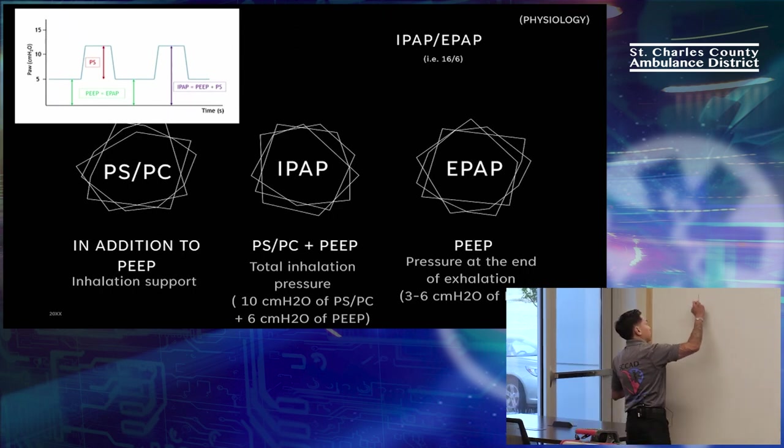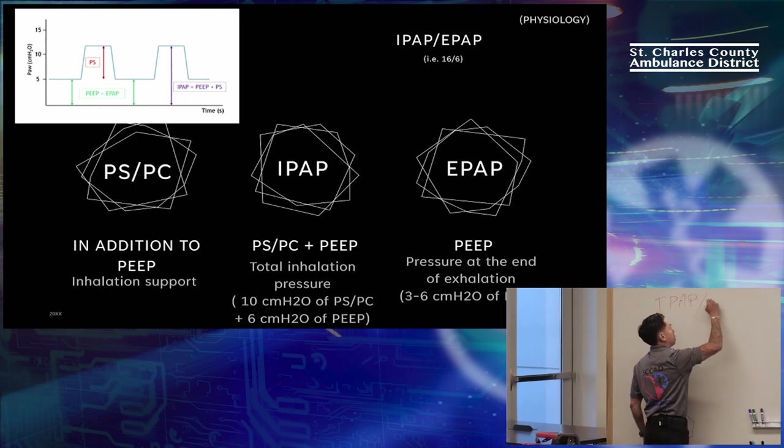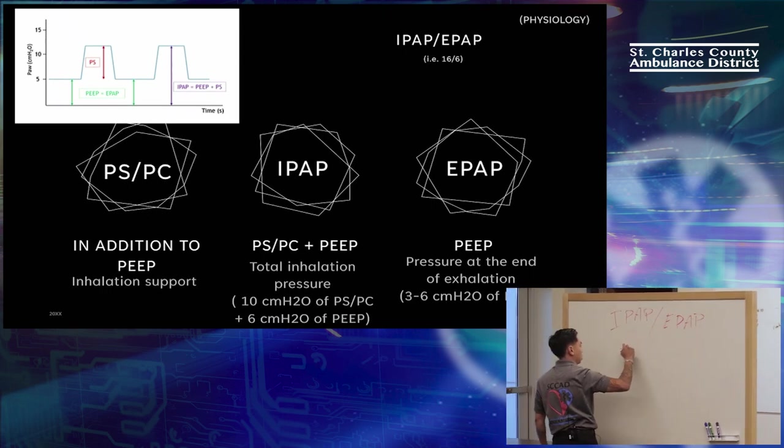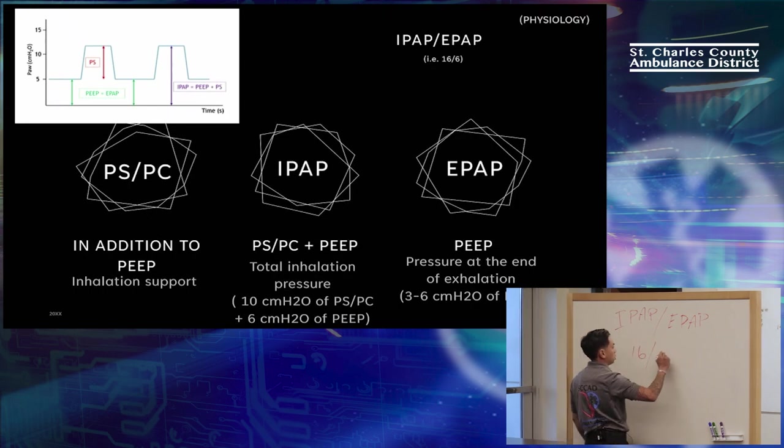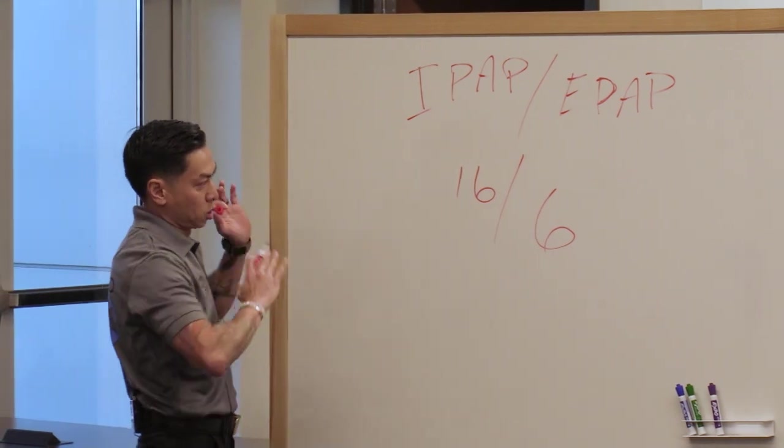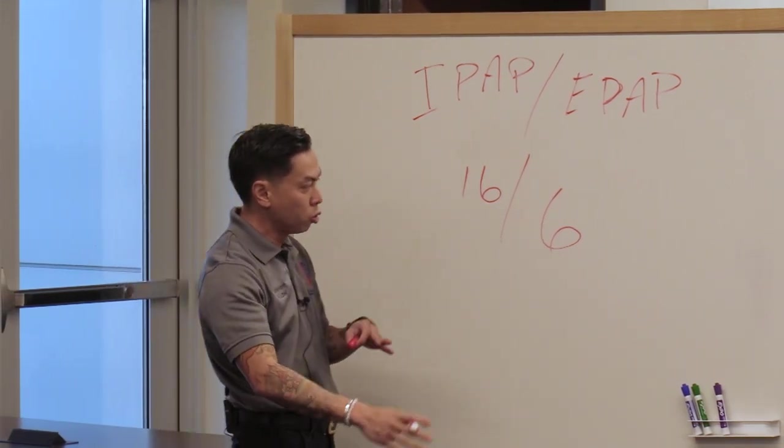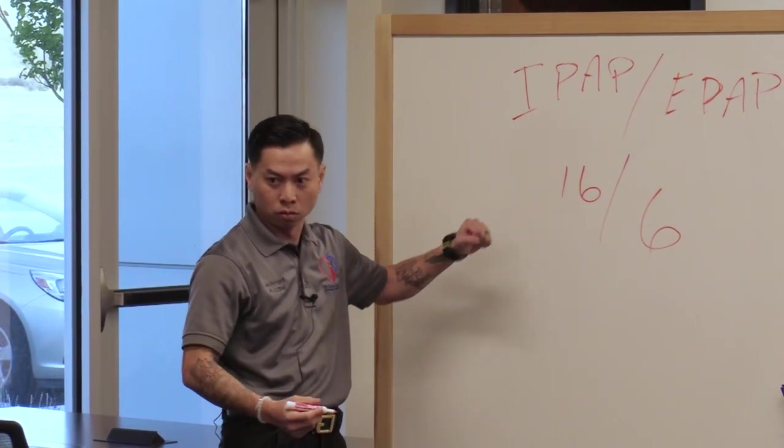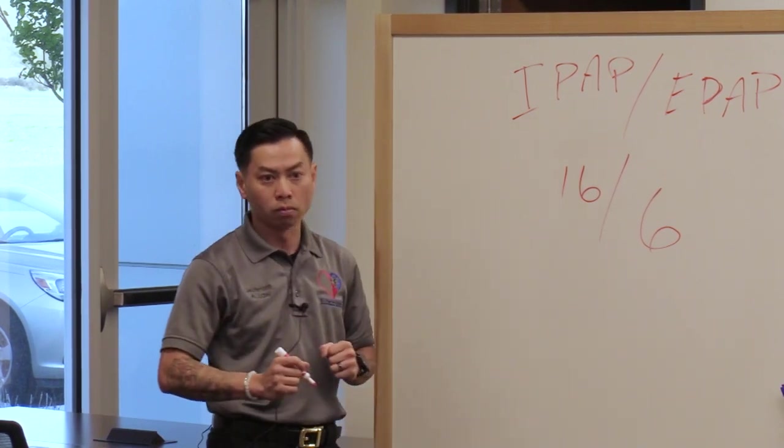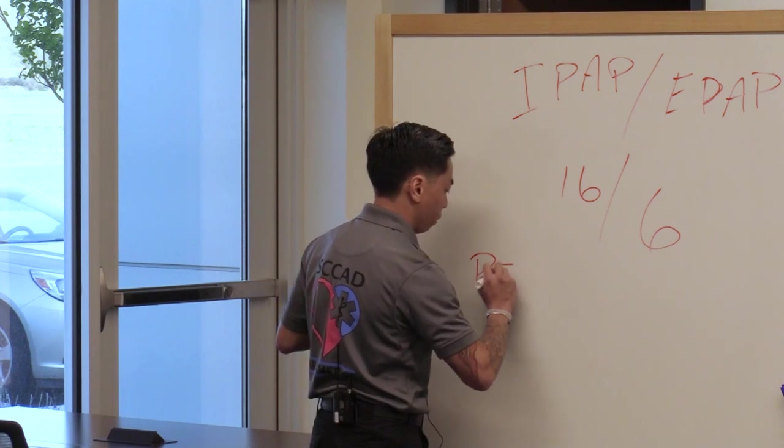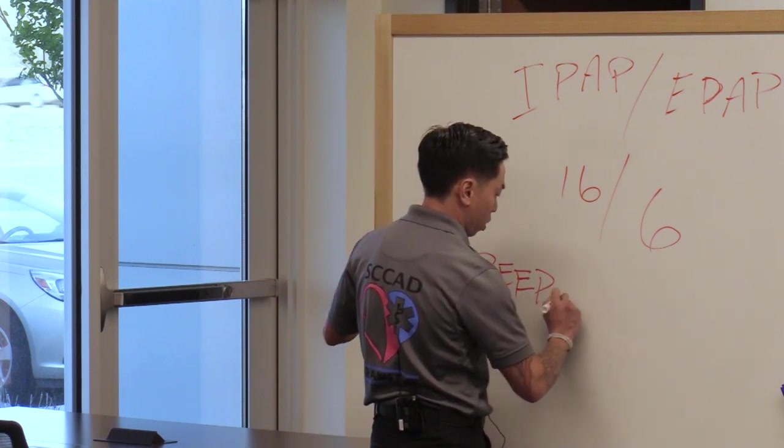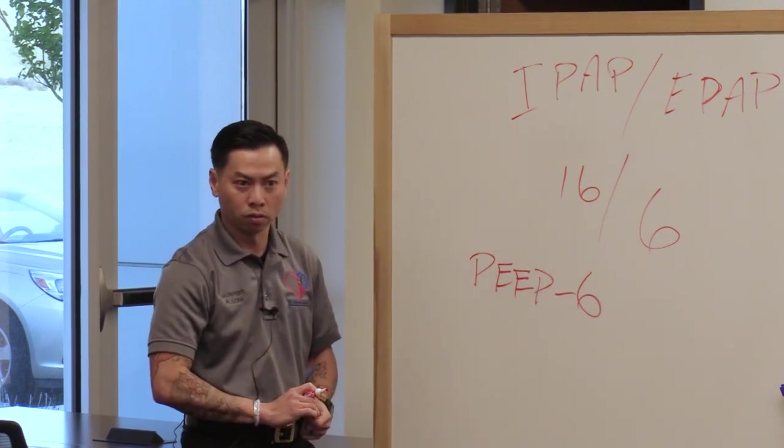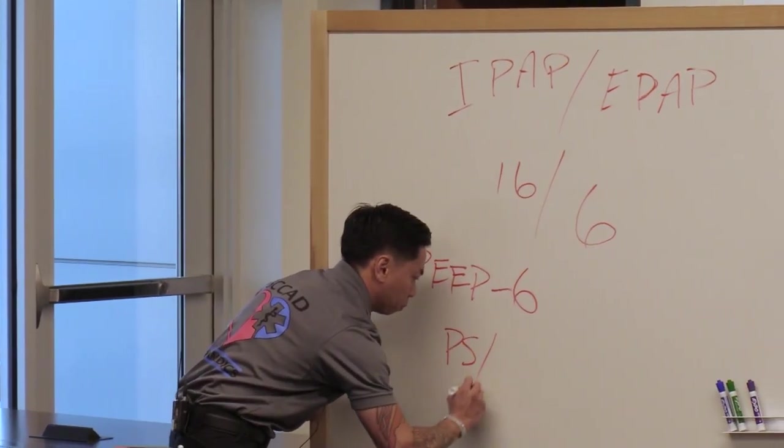IPAP versus EPAP. Our protocol, as it sits right now, our IPAP ratio is 16 over 6. If just off the surface, having this information, what two settings do we know that we're adjusting on the ventilator if we're trying to match this ratio for this patient? Great, PEEP. And what would our PEEP be? 6. What other settings would I change? Pressure control.